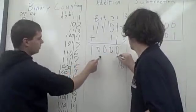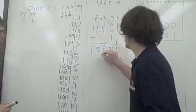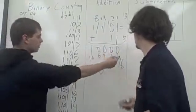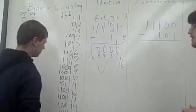13 plus 3: 1, 2, 4, 8, 16. We have all 0's here, so none of these matter, and we just have 16. So that is correct.